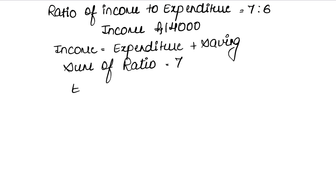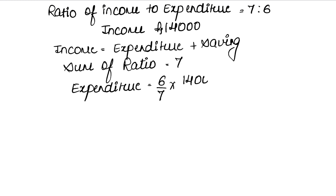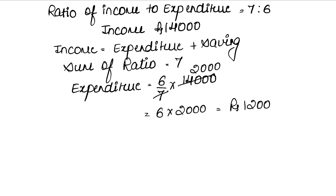So expenditure is calculated as: ratio of expenditure, that is 6, upon total ratio 7, into income. Income is 14,000. So 6/7 × 14,000 — since 7 twos are 14, we get 2,000. So 6 × 2,000 = expenditure is rupees 12,000.